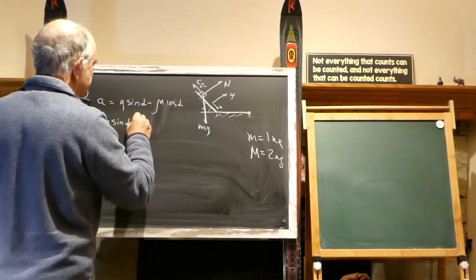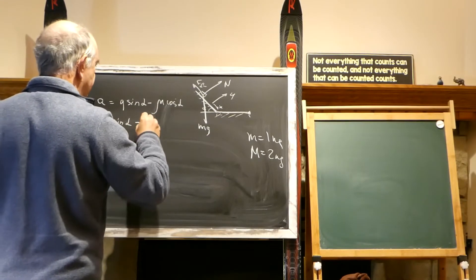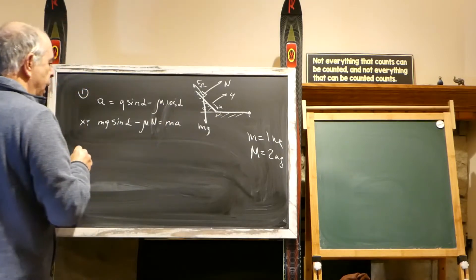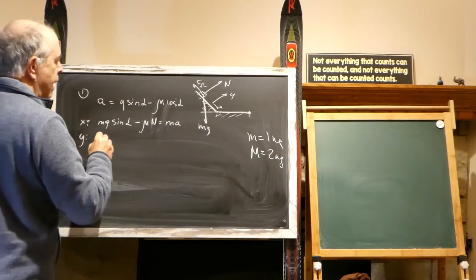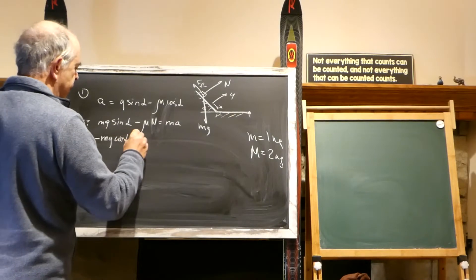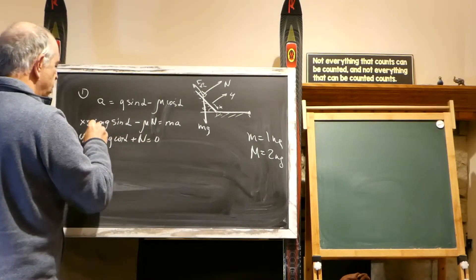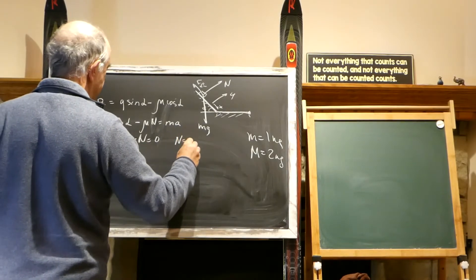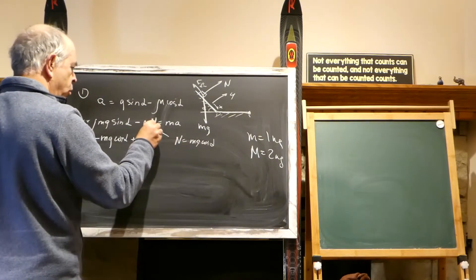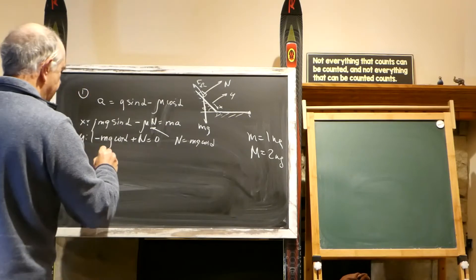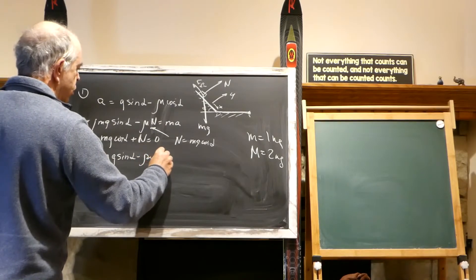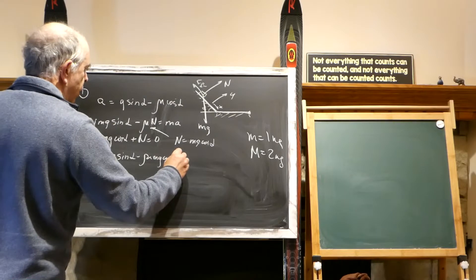M G sine alpha minus mu N equals MA. And Y axis, we have M G cosine alpha plus N equal zero, and we have N equal M G cosine alpha because we moved it to another side. From here we immediately have M G sine alpha minus mu M G cosine alpha equal MA.